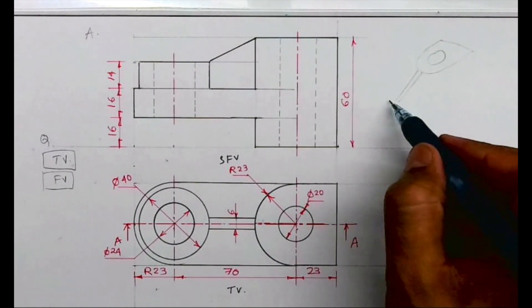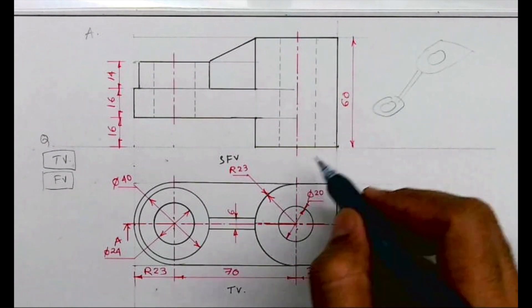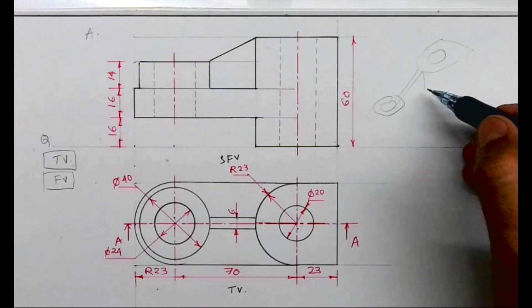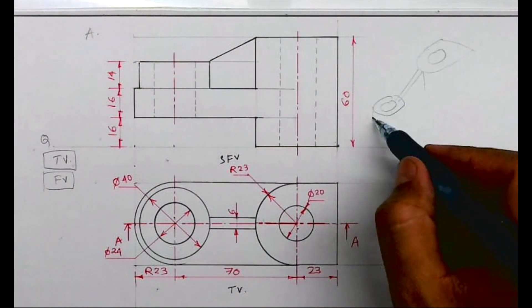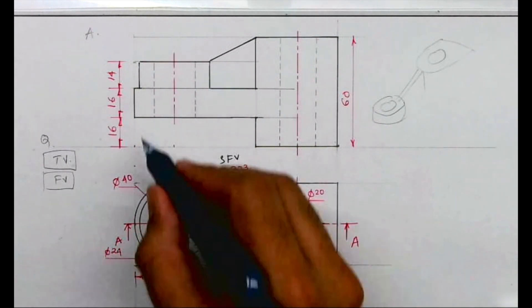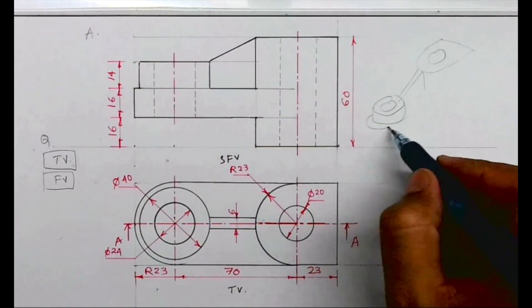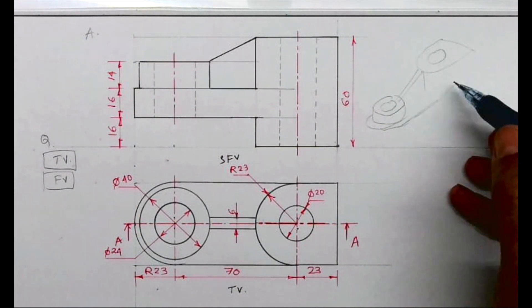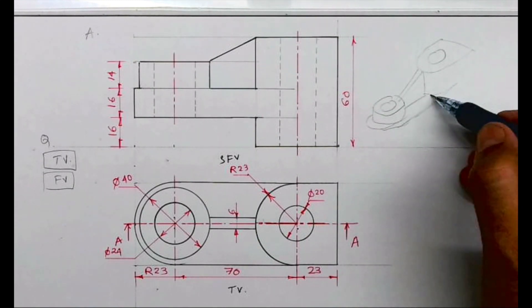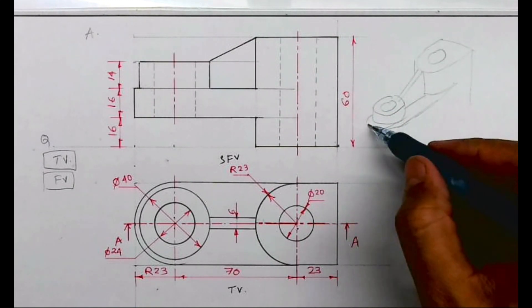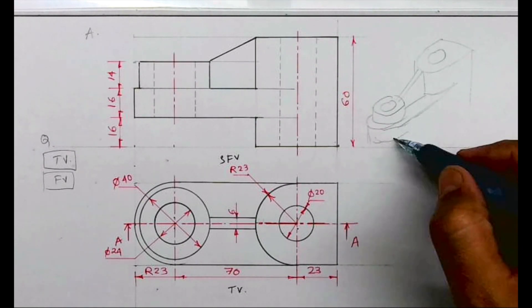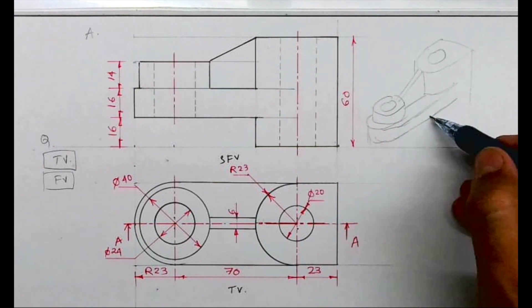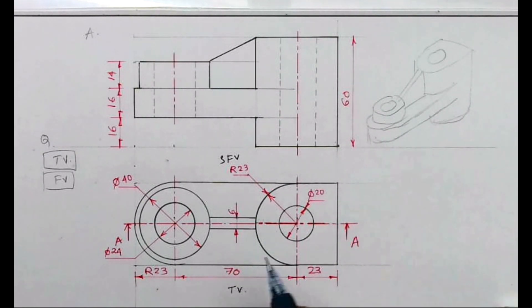Then we have a rib, then again we have a circle. It goes down, this also goes down by 14, and then another circle. Then you draw vertical line, vertical line from here, again you draw, and from here draw it.